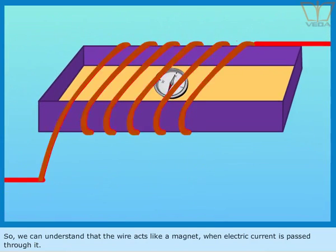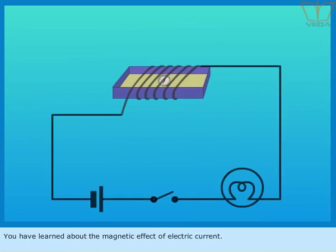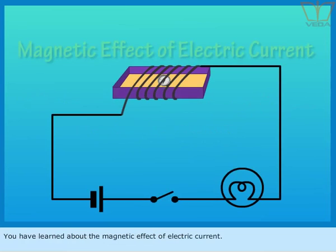So, we can understand that the wire acts like a magnet when electric current is passed through it. This is called the magnetic effect of electric current. You have learned about the magnetic effect of electric current.